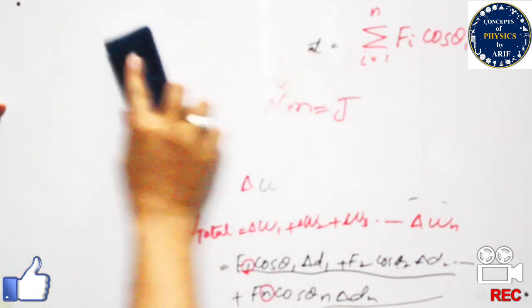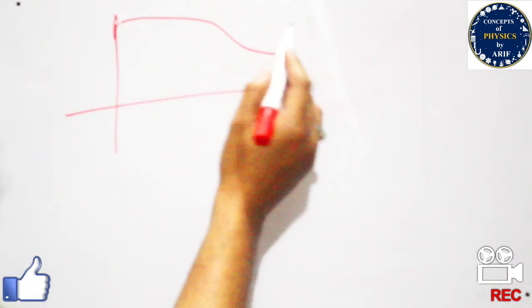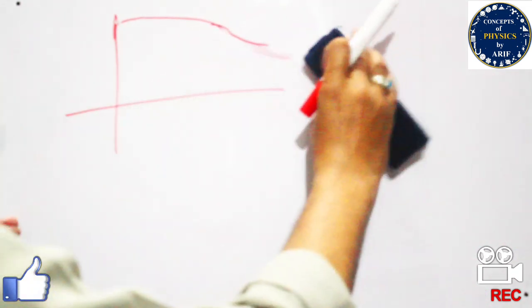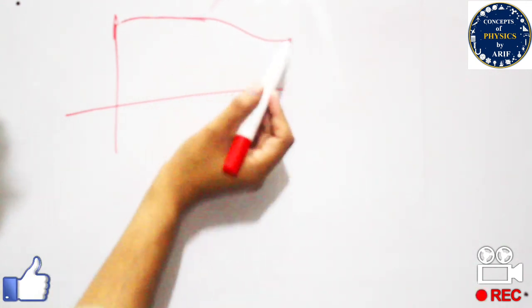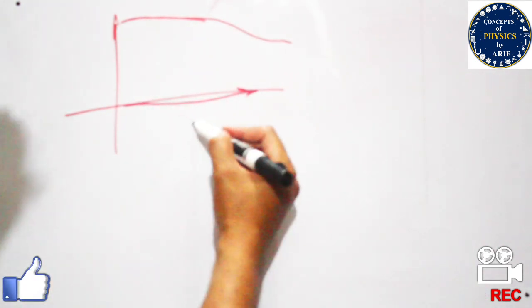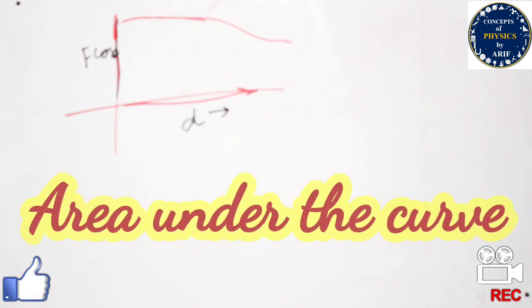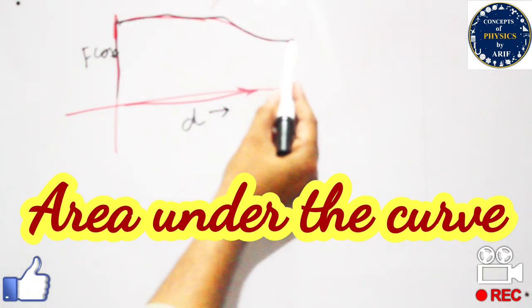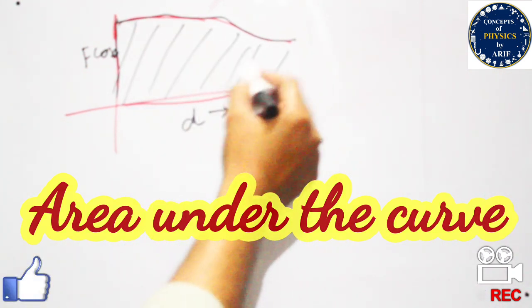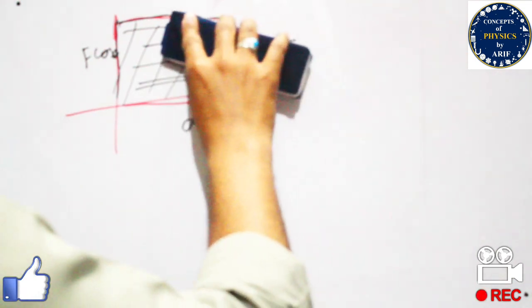In the other case, when a variable force is applied on a system, we can represent this graphically. The horizontal axis represents displacement d and the vertical axis represents the force component F·cosθ. The work done is the area under the curve. The whole area under this curve represents the total work done, but the question is how we calculate this area.